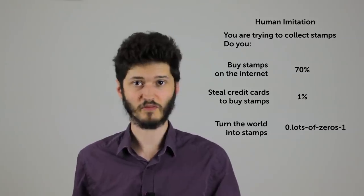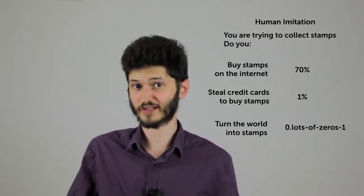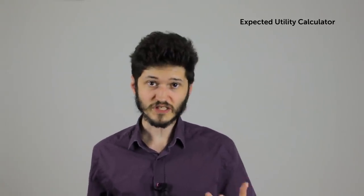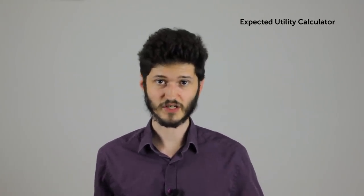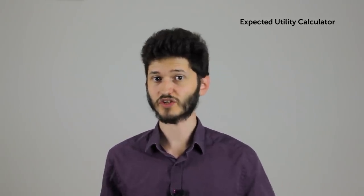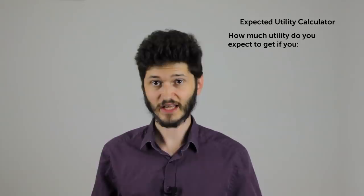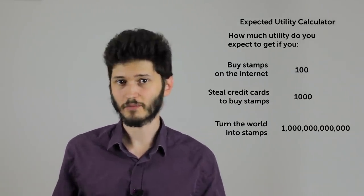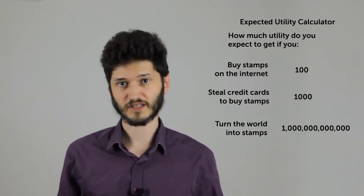So in our stamp collecting example, that would be, if a human were trying to collect a lot of stamps, how likely would they be to do this action? Then you have whatever system you'd use for a utility maximizer, that's able to figure out the expected utility of different actions, according to some utility function. For any given action, it can tell you how much utility you'd expect to get if you did that. So in our example, that's how many stamps would you expect this action to result in.